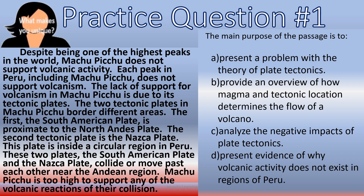Now go over to the question: 'The main purpose of the passage is to — A) present a problem with the theory of plate tectonics; B) provide an overview of how magma and tectonic location determines the flow of a volcano; C) analyze the negative impacts of plate tectonics; or D) present evidence of why volcanic activity does not exist in regions of Peru.'